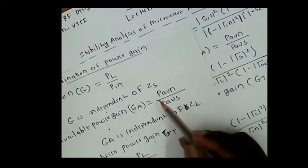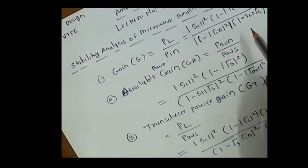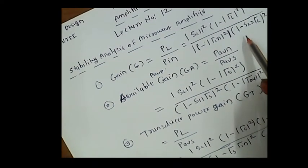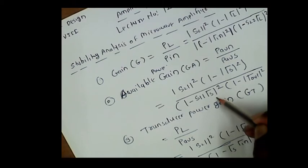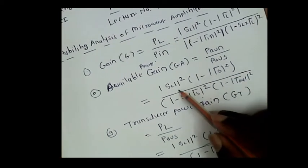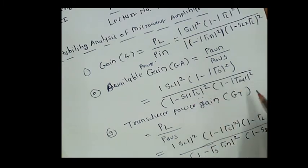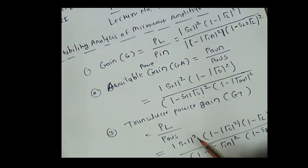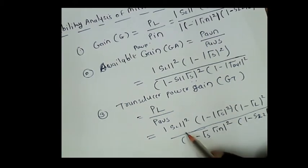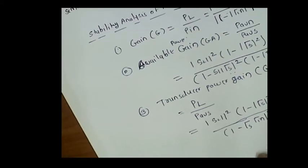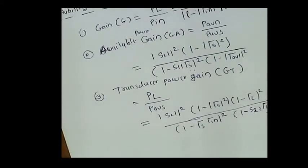To summarize the three power gains: simple power gain G is independent of the source impedance — there is no source resistance in its expression. Available power gain GA is independent of the load resistance and depends only on the source reflection coefficient and S-parameters. Transducer power gain GT is dependent on both load resistance and source resistance, involving reflection coefficients at source and load and S21. These three gains are used in transistor amplifier analysis.